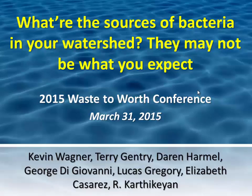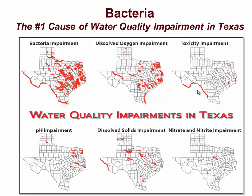In Texas, bacteria is our number one cause of water quality impairment, and throughout really most of the U.S., that is the number one cause of water quality impairment for freshwater streams and rivers. This map of the state of Texas shows the different various impairments we're dealing with, and you can see essentially anywhere we've got water in Texas, we've got a bacteria water quality issue.